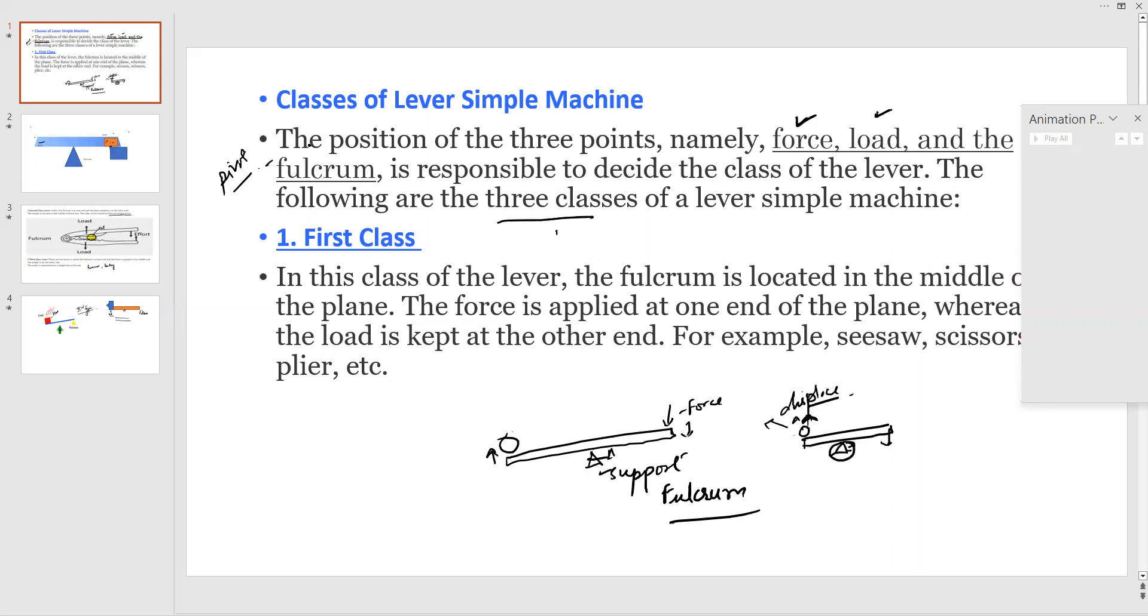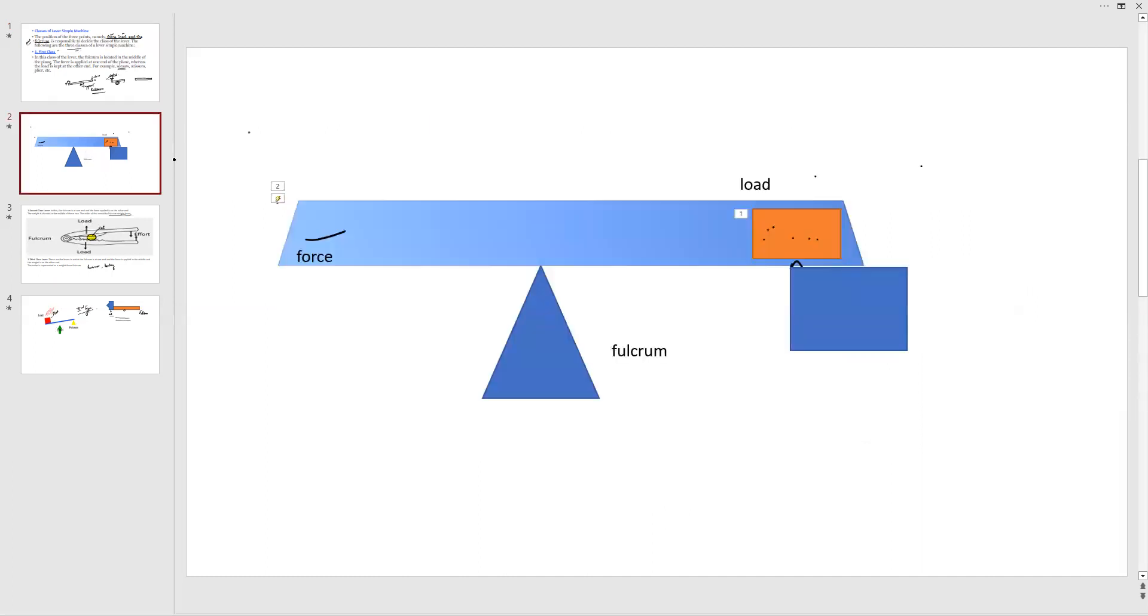When we talk about the first class lever, in this first class of lever, we say that the fulcrum is located in the middle of the plane, like seesaw for example. This is the plane over here, this is the fulcrum over here, force and load.